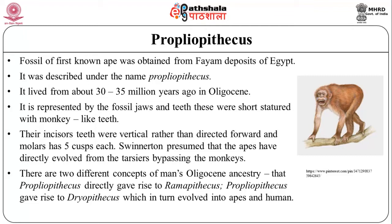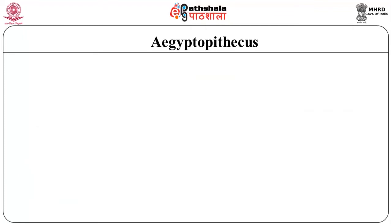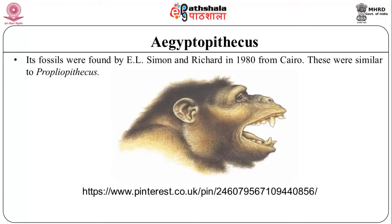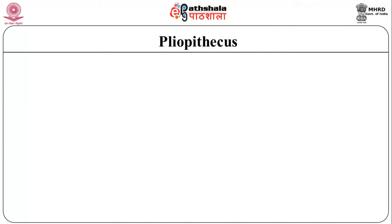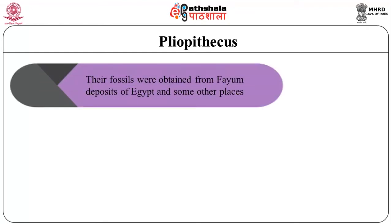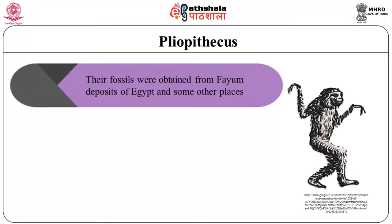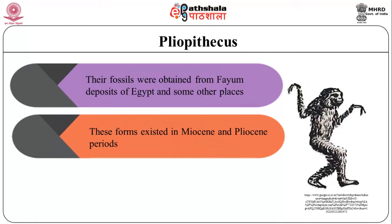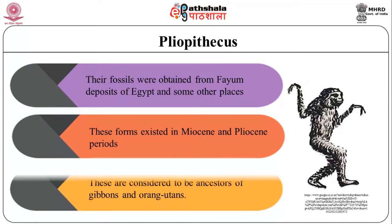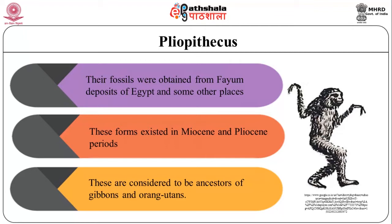Winnerton presumed that apes evolved directly from tarsiers, bypassing monkeys. There are two different concepts of man's Oligocene ancestry: that Propliopithecus directly gave rise to Ramapithecus, or that Propliopithecus gave rise to Dryopithecus which in turn evolved into apes and humans. Aegyptopithecus is a fossil found by E.L. Simon and Richard in 1980 from Cairo, and these were similar to Propliopithecus. Pliopithecus fossils were obtained from Fayum deposits of Egypt and other places, existing in Miocene and Pliocene periods, and are considered ancestors of gibbons and orangutans.